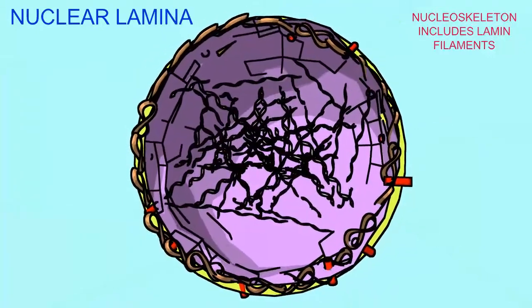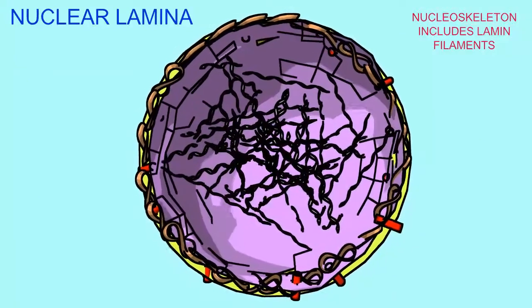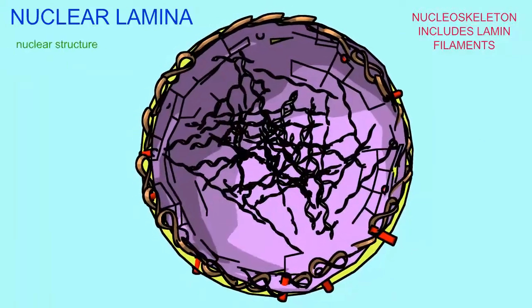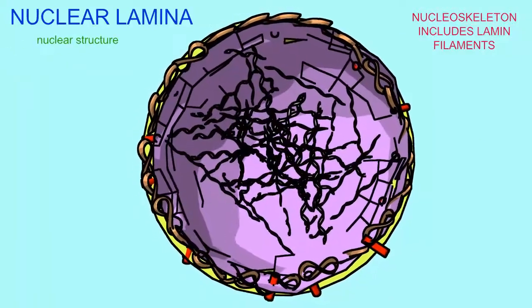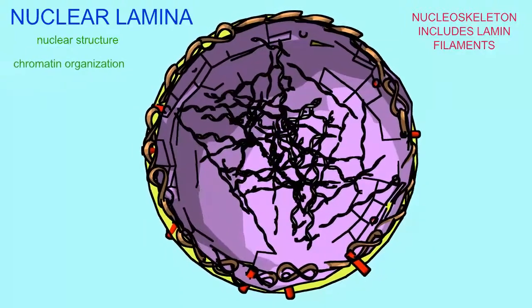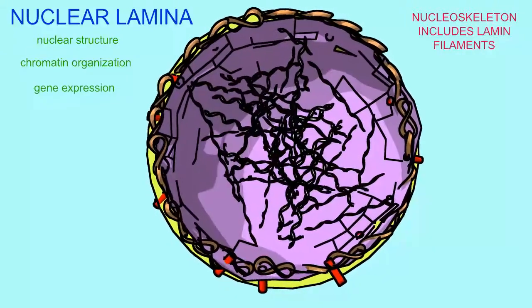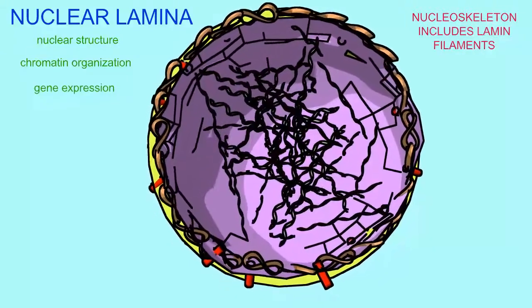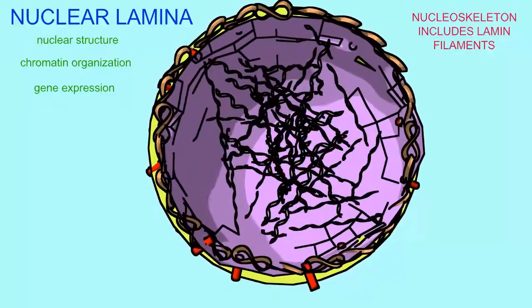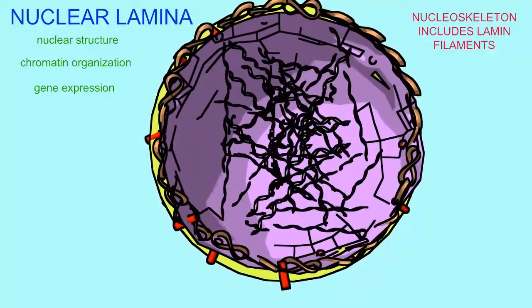Lamins have such important roles in maintaining the structure of the nucleus, determining the position of chromatin and regulating gene expression, that mutations in lamins can cause severe effects.